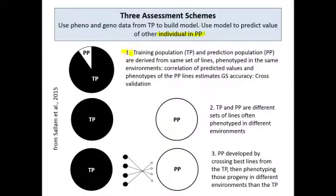In scheme number one, the training population and prediction population are derived from the same set of lines. They are phenotyped in the same environments, and you get the correlation of the predicted values and the phenotypes of the prediction population lines to estimate the accuracy of genomic selection. This process is also called cross-validation, and we discussed the details of that in an earlier module.